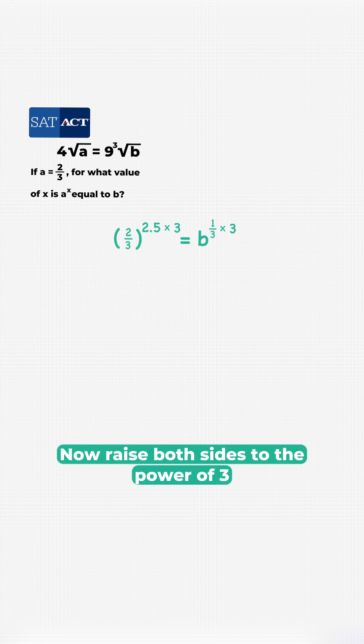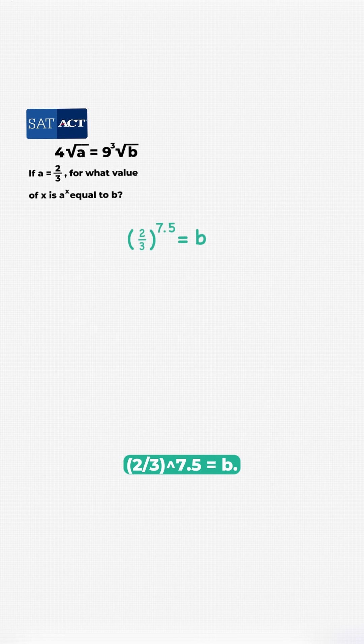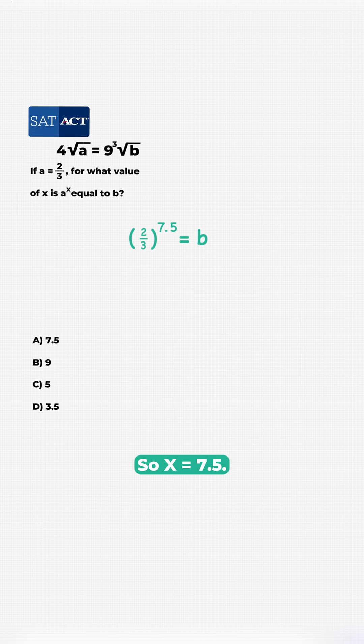Now raise both sides to the power of 3 to cancel that 1 third. Boom, 2 thirds to the power of 7.5 equals B. So X equals 7.5.